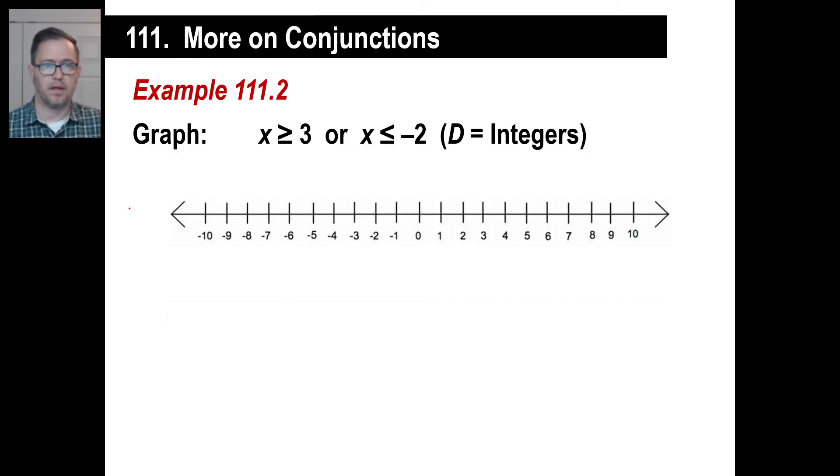Okay, here's a typical example. Graph this and you can pause and copy this. And of course, here's the key word is or. Either one of those will work. And you're allowed to use integers. So let's do the first one. x is greater than or equal to 3. So that'll be 3, 4, 5, 6, you know, and just so on. All right. x is also less than or equal to negative 2, which gives us this. You know, all the way down below and so on. Okay, piece of cake.